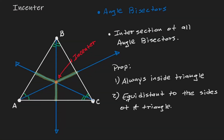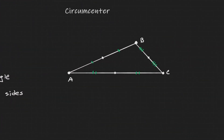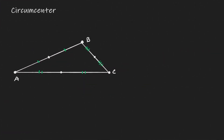Now that we have discussed the incenter of a triangle, let's discuss the circumcenter. For the circumcenter, we need to consider perpendicular bisectors. The points I have here are the midpoint between A and B, the midpoint between B and C, and the midpoint from A to C.